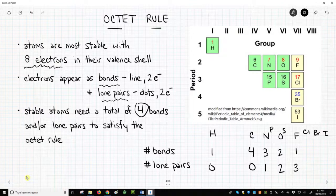We will later see in this playlist that sulfur and phosphorus will sometimes violate the octet rule by having more than four bonds and or lone pairs.